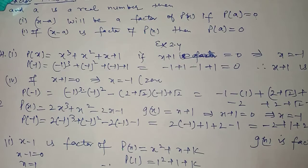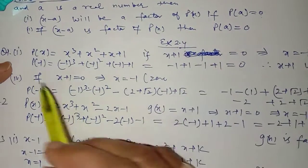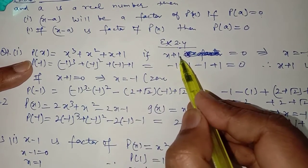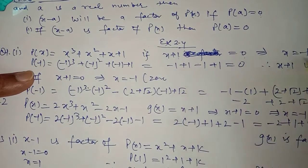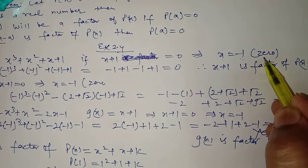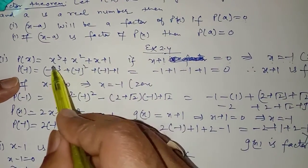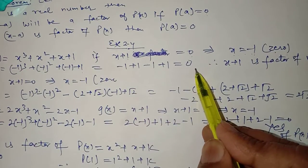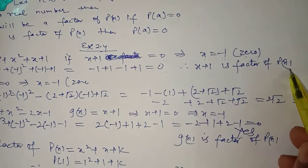This is a somewhat easy exercise and we will use the same approach as in the last exercise. In question 1 of exercise 2.4, the polynomial p(x) = x³ + x² + x + 1 is given, and you have to find whether (x + 1) is a factor or not. Simply put x + 1 = 0 to get x = −1, then substitute x = −1 into p(x): (−1)³ + (−1)² + (−1) + 1 = 0. Since the remainder is 0, (x + 1) is a factor of p(x).